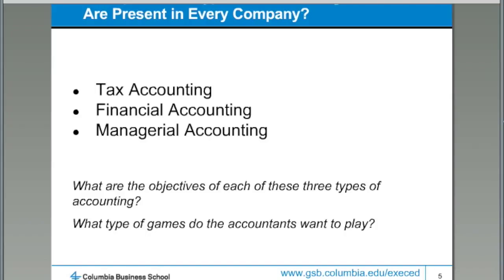Any time we make decisions in the company, it would be nice if those decisions are informed by data and information about which decision is likely to create the best financial result. That brings us to our third type of accounting called managerial accounting. If you think about tax accounting as trying to present the poorest view of our performance as possible, and financial accounting is trying to present the best view of our results as possible, then managerial accounting is really accounting that we do for ourselves so that we actually know how we're doing.